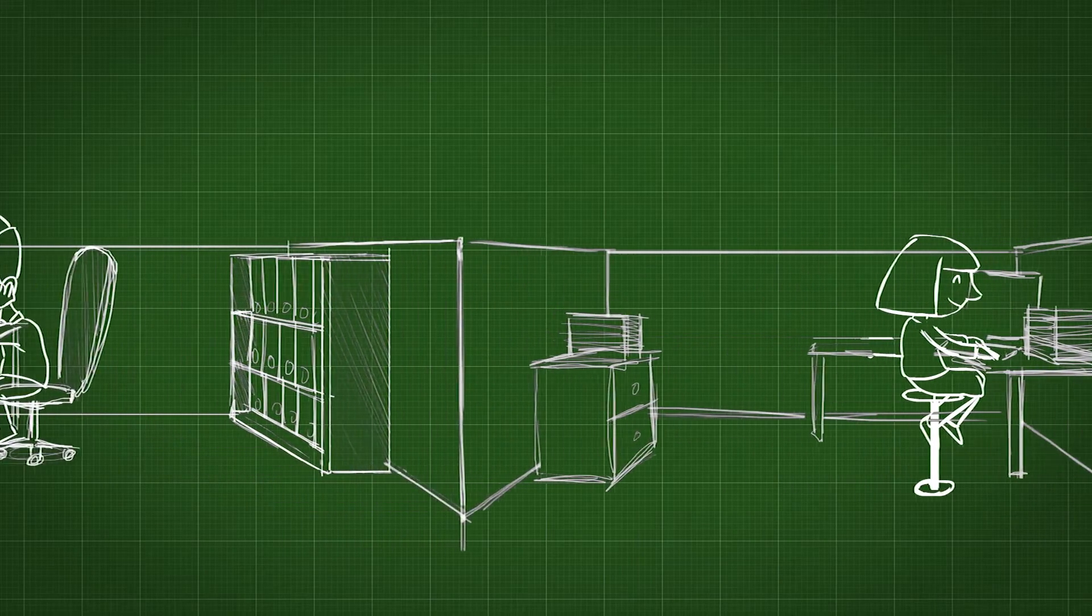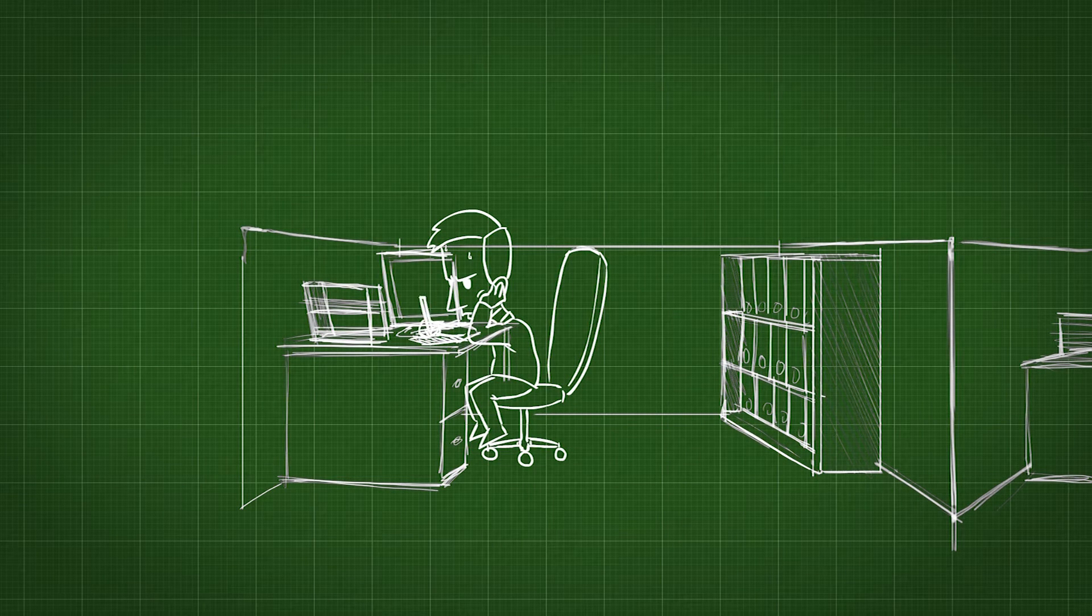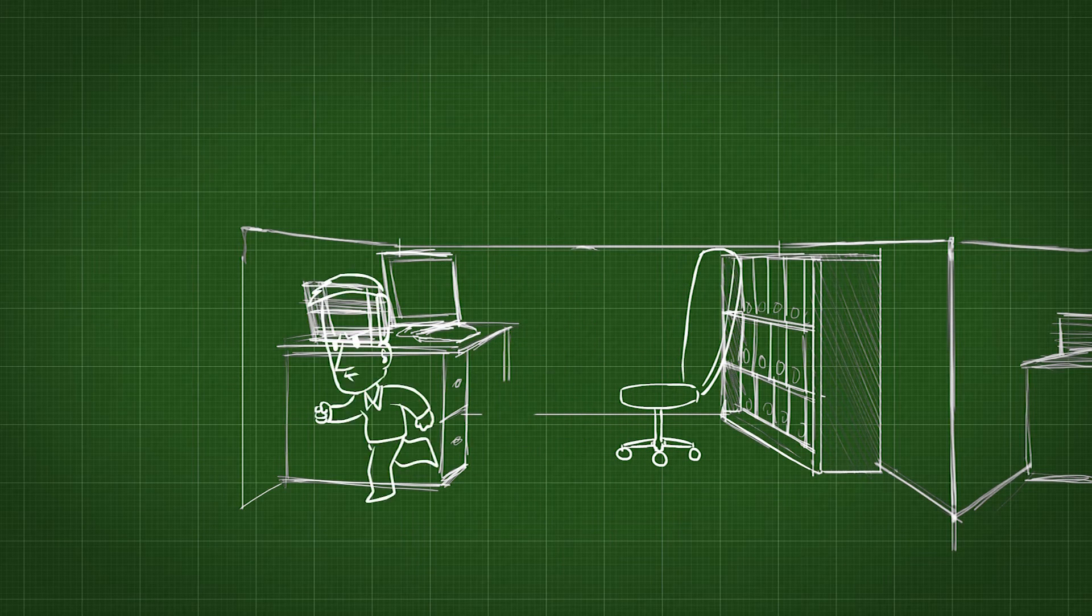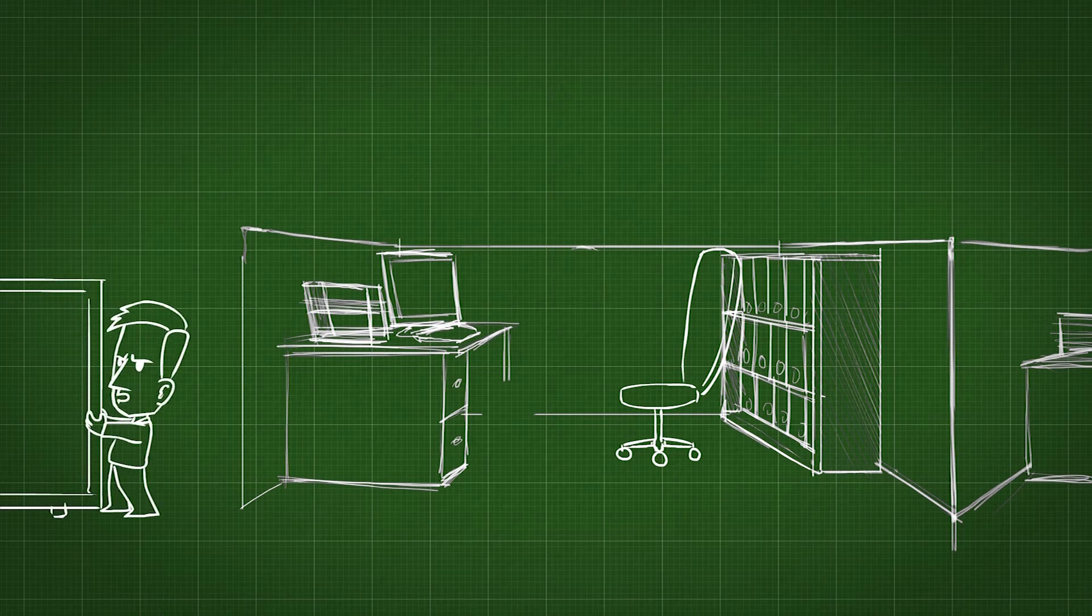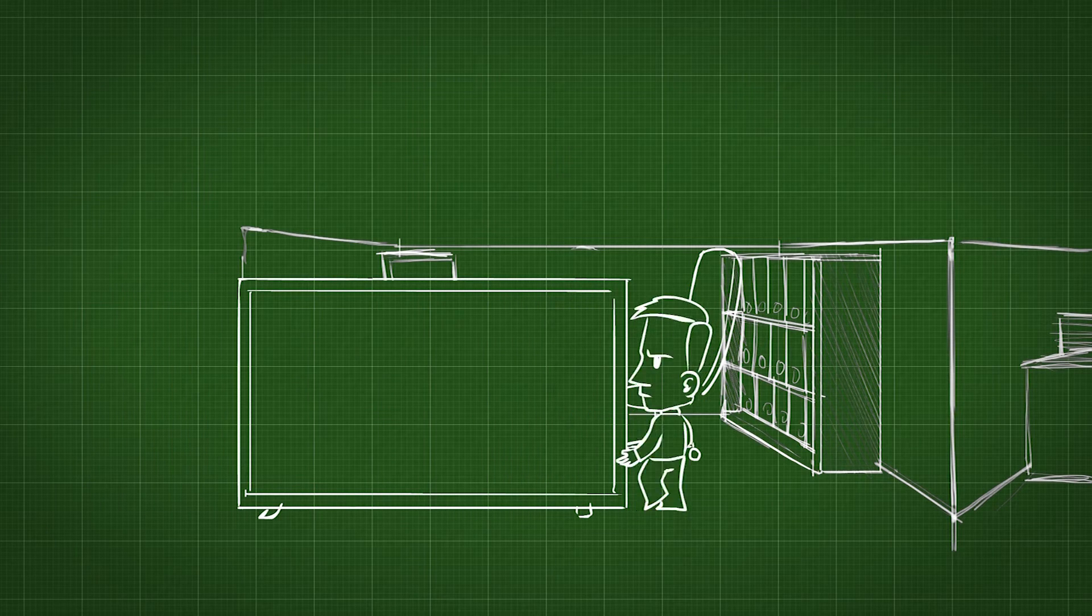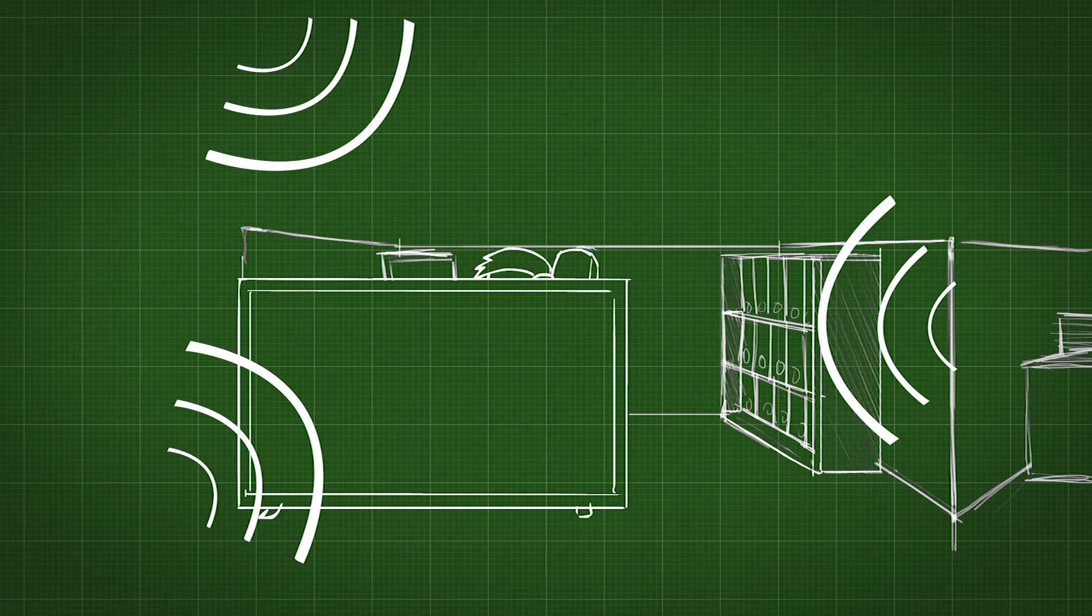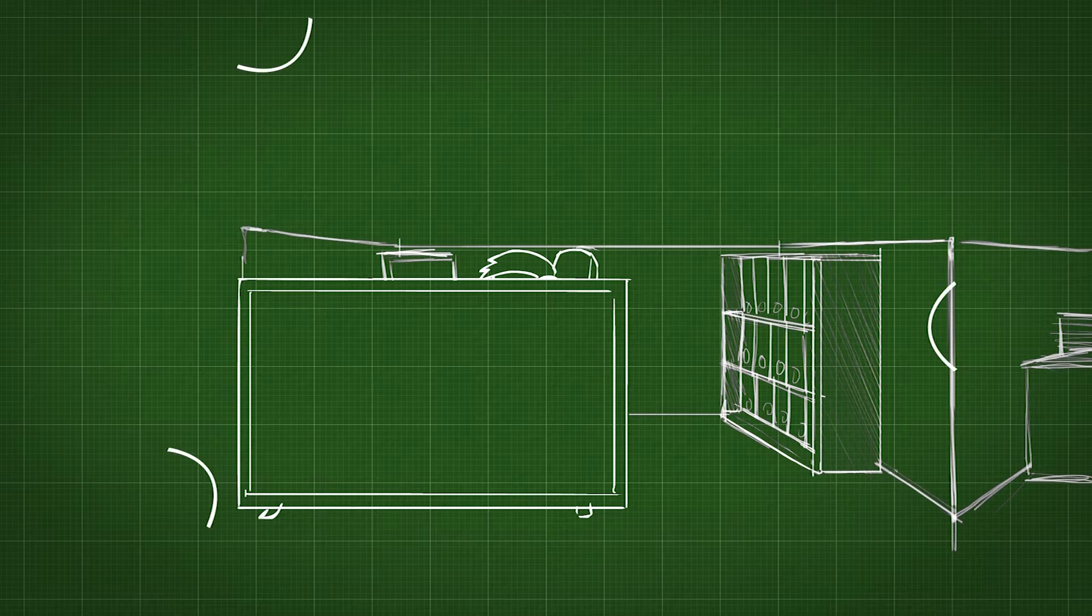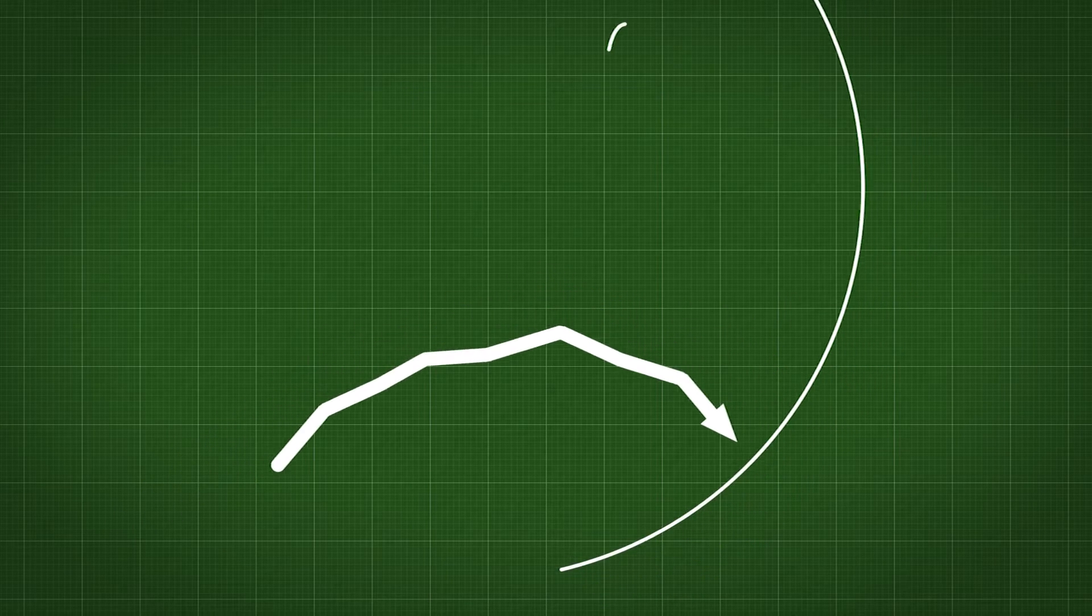But open plan offices can be stressful, especially for introverts. To them, it's a bit like being on a stage. Being seen all the time is bad enough, but at least you can hide behind a screen or a plant. Sounds are harder to control. Speech is a major distraction. We're all curious, so we love hearing what other people are saying. And speech travels freely around corners and over dividing walls. It bounces off the floors, walls and ceilings.